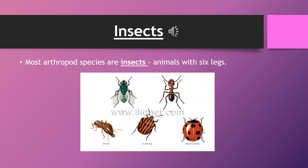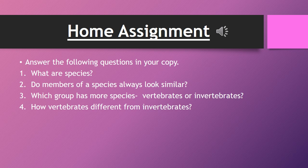Insects. Most arthropod species are insects. New species of insects are continually being found. Estimates of the total number of insect species range from 2 million to 30 million. Insects have 6 legs and most have wings. Insects were the first animals capable of flight.